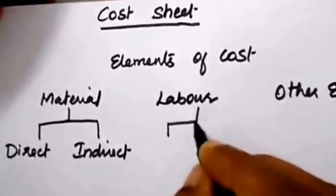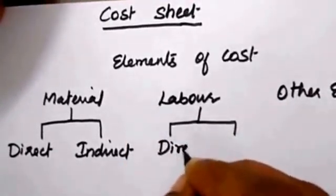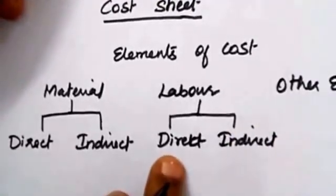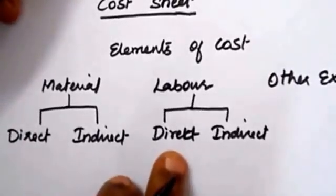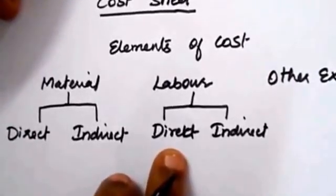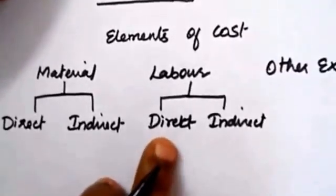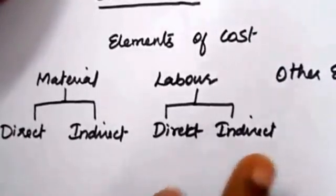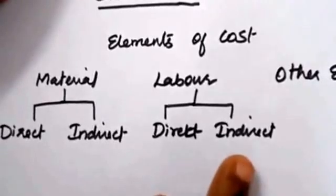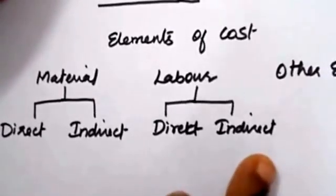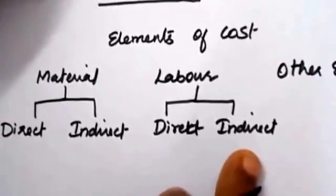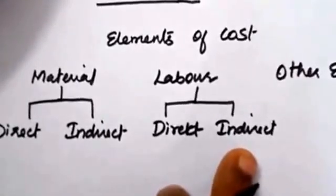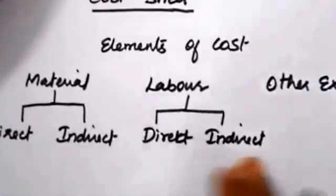Labor is also classified into two categories: direct labor and indirect labor cost. Direct labor means the people involving in the production process who are entitled to get wages from the company. Indirect labor cost means employees who are working in the organization but are not directly involving in the production process — their salary comes under indirect labor.